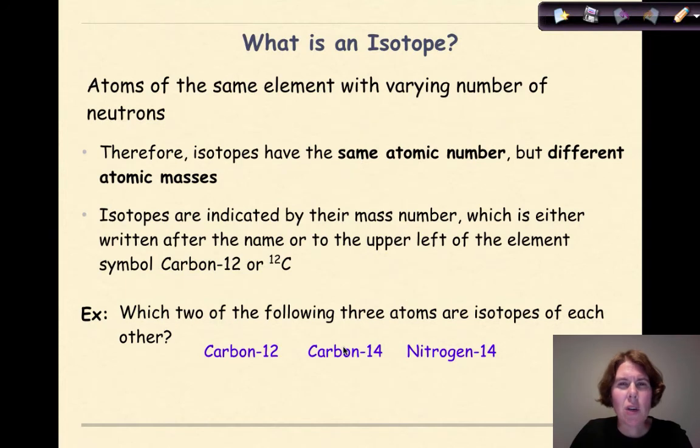Now what is an isotope? We define an isotope as atoms of the same element with varying numbers of neutrons. Therefore, isotopes have the same atomic number but different atomic masses. Isotopes are indicated by their mass number, which is either written after the name or to the upper left of the element symbol.